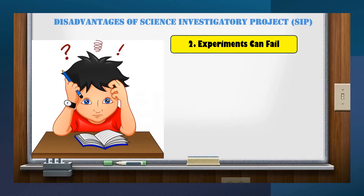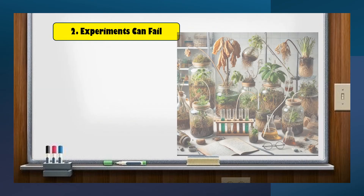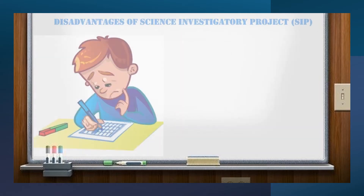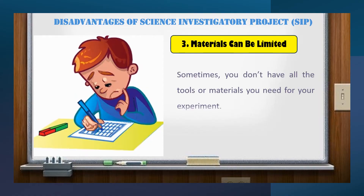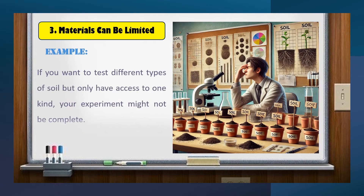Second, experiments can fail. Sometimes your experiment doesn't work the way you expected, which can be frustrating. For example, you might try to grow plants with different types of water, but if all of them die, you won't get the results you expected. Third, materials can be limited. Sometimes you don't have all the tools or materials you need for your experiment. For example, if you want to test different types of soil but only have access to one kind, your experiment might not be complete.